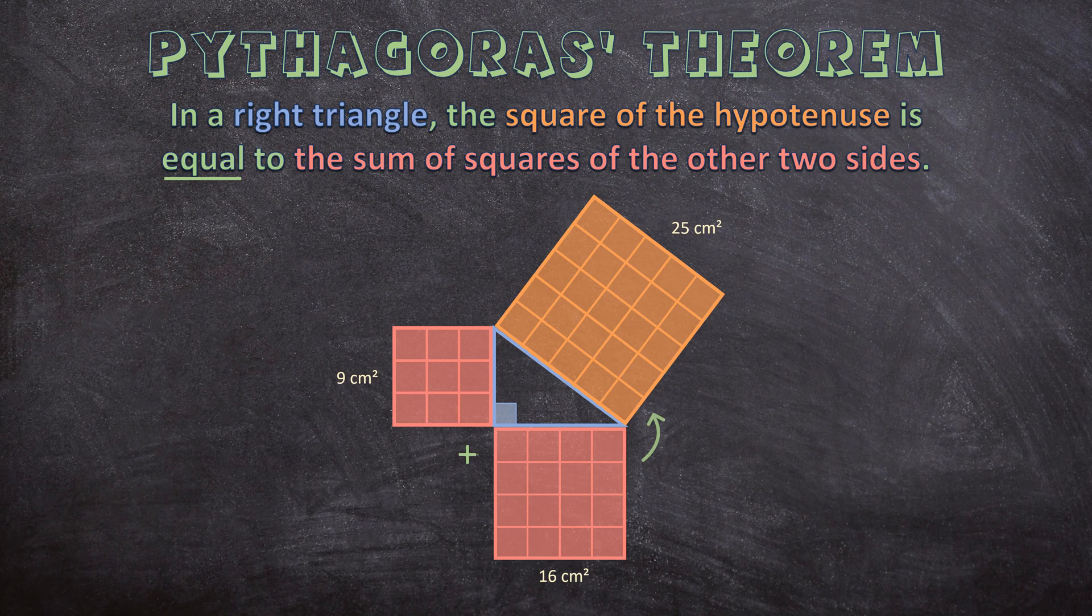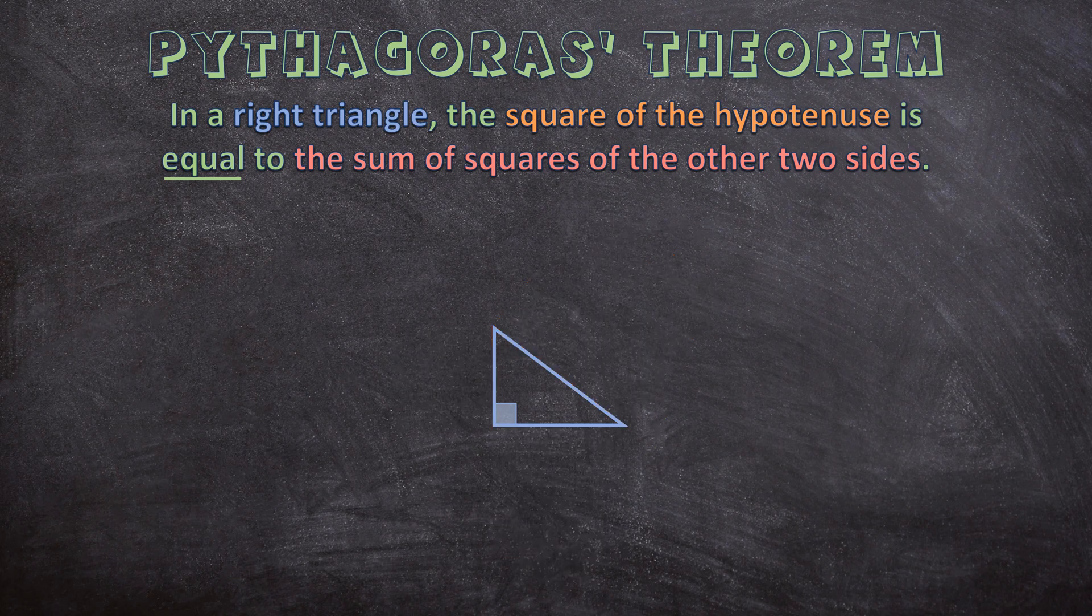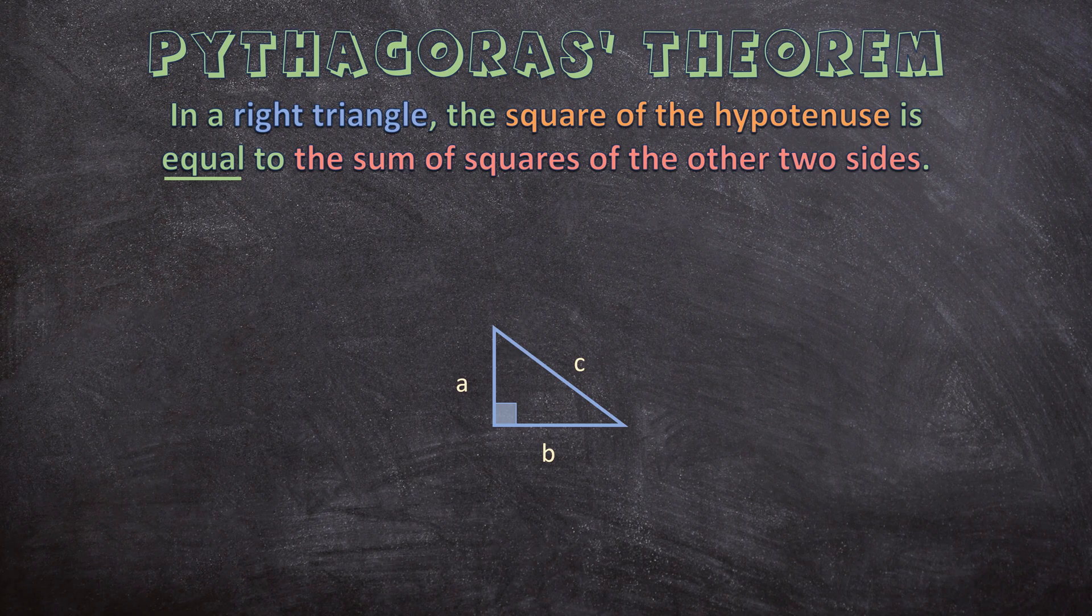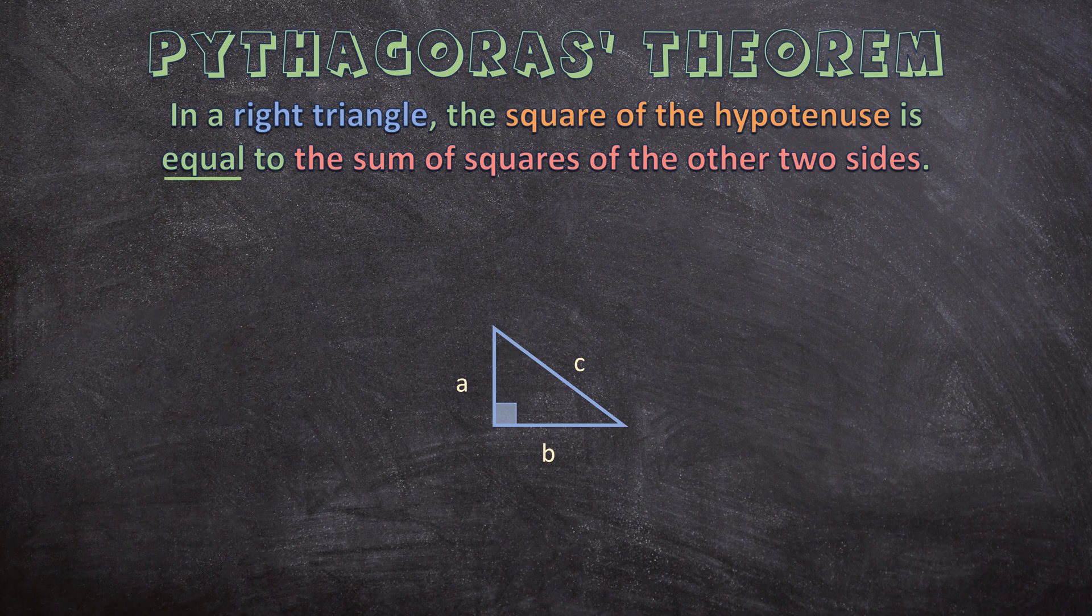Now let's take away the lengths of the sides. And without having any lengths, we are going to name the sides A, B, and C. The hypotenuse is always C. The other two, A and B, you can always swap around. It doesn't matter which one is A and which one is B, but C is always the hypotenuse.